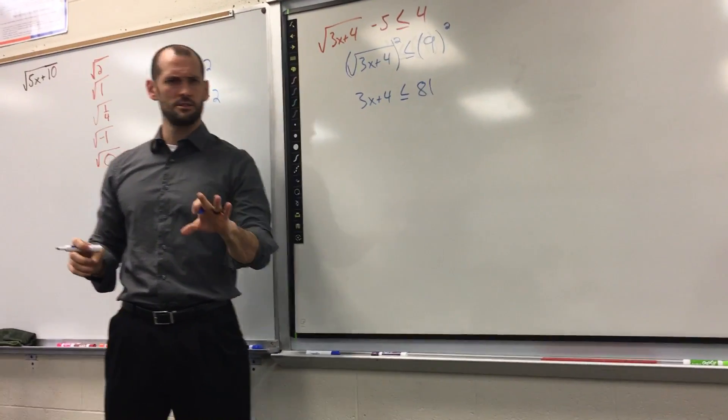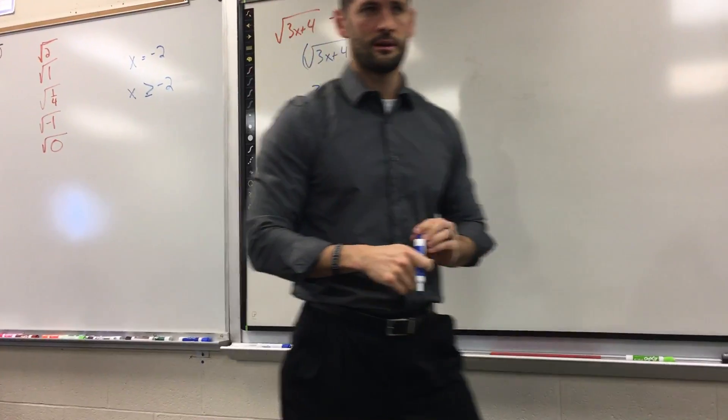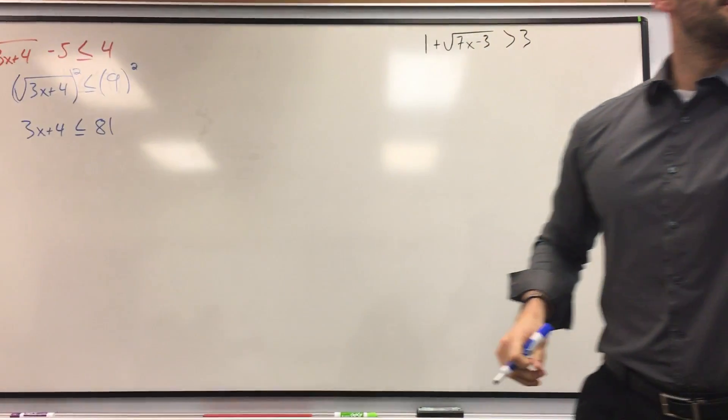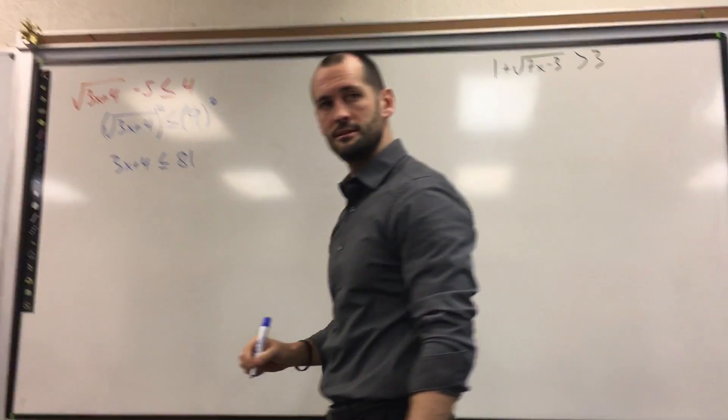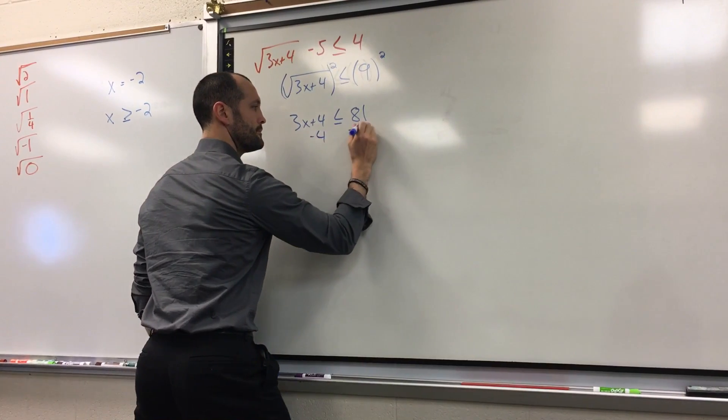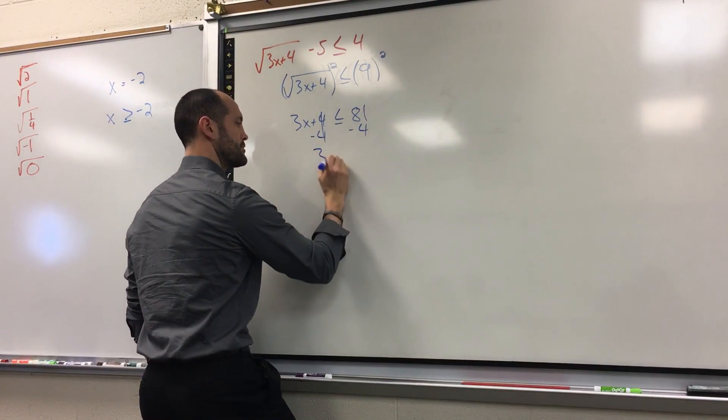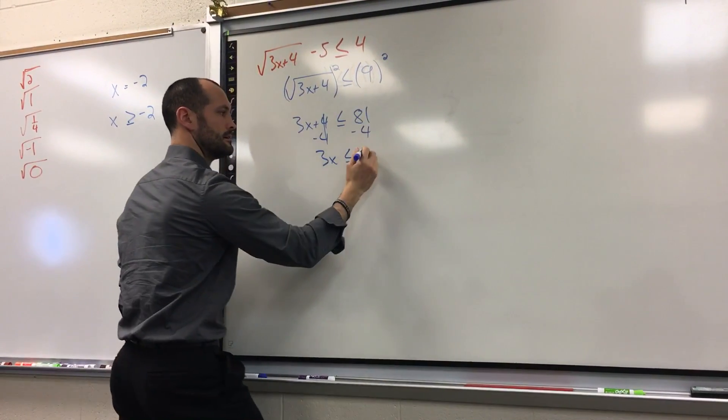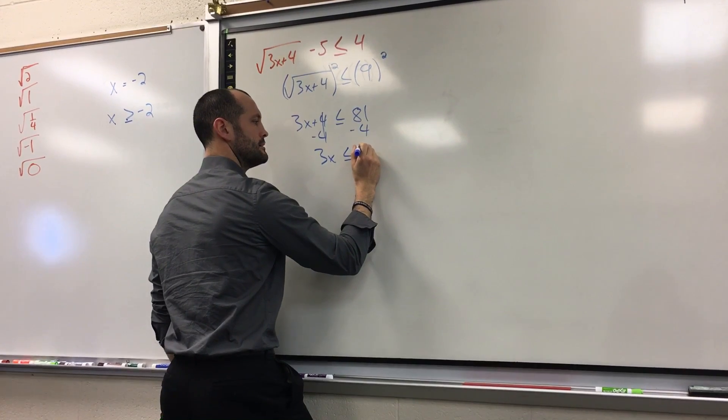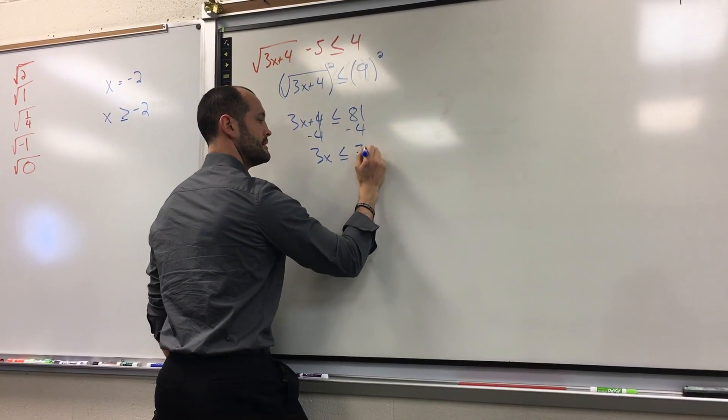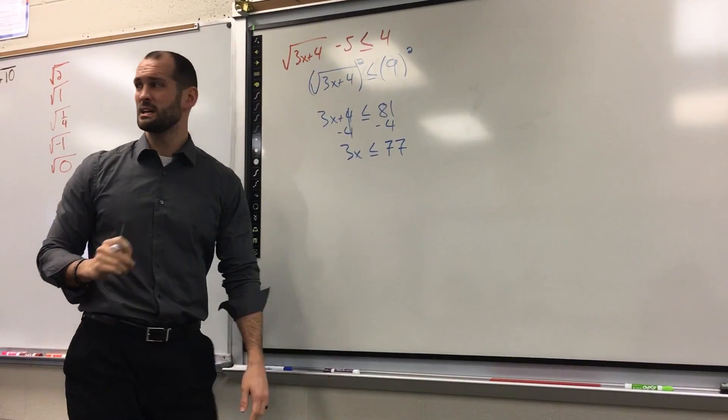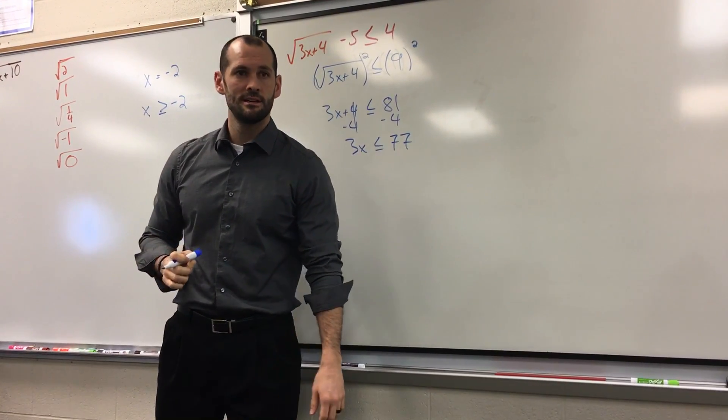It's going to be a little ugly. Don't judge. Let's solve from here. How do I solve? Subtract 4. Yep. Left with 3x less than or equal to what? 77. Excellent. But it's not going to come out evenly. So what? Let's do it.